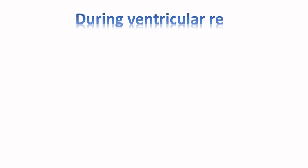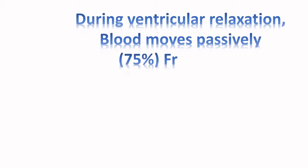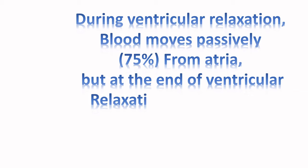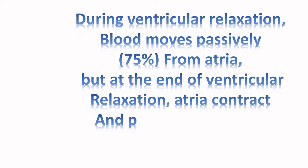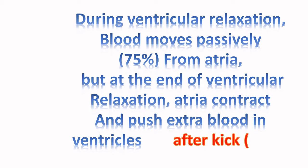Guys, during ventricular relaxation, actually blood moves passively from the atrium, which counts 75% of the whole blood moving from the atrium into the ventricle. But at the end of ventricular relaxation, the atrium contracts and pushes extra blood into the ventricles. And that is what we call atrial kick. And it counts 20% of the whole blood going into the ventricles. You see, 75 plus 20, it is 95. There is no other 5% which make it 100%, which means there is an extra space within the ventricle that is not filled, which is 5%.